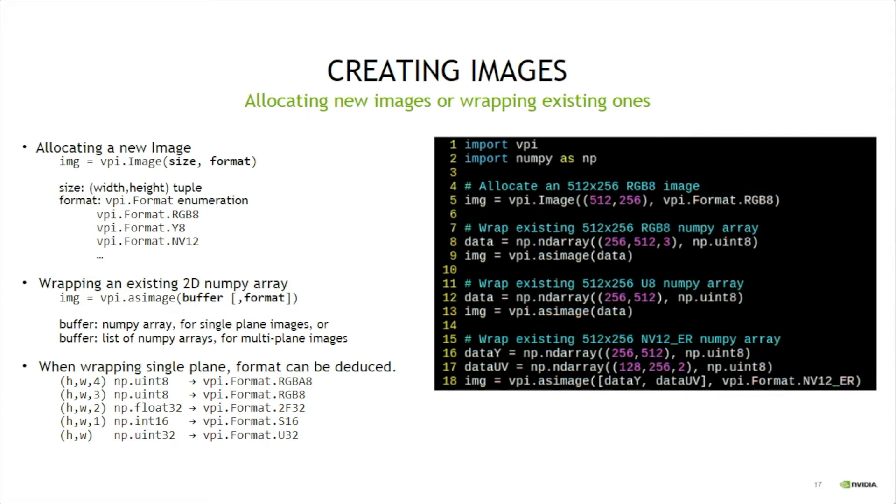The image format is inferred by the array shape. In this case, it is an RGB8 image. The last bullet in the slide shows how other formats are deduced. When deducing is not possible or not wanted, users can pass the format to the asImage function as a second parameter.